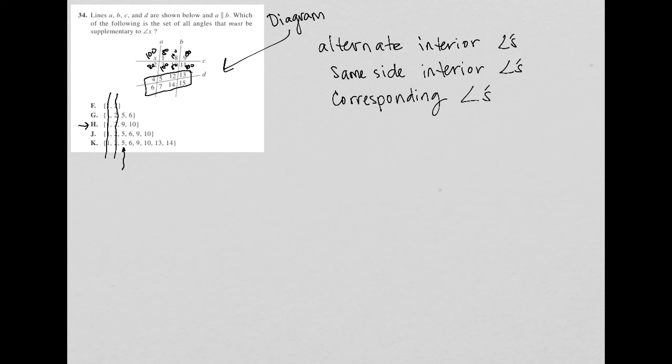And then none of those numbers actually translate to any of these angles down here because these angles are all on a separate transversal, right? This line D. So what that tells me is that there's nothing down here that relates to angle X. And therefore, because angle five is a part of this set of angles,